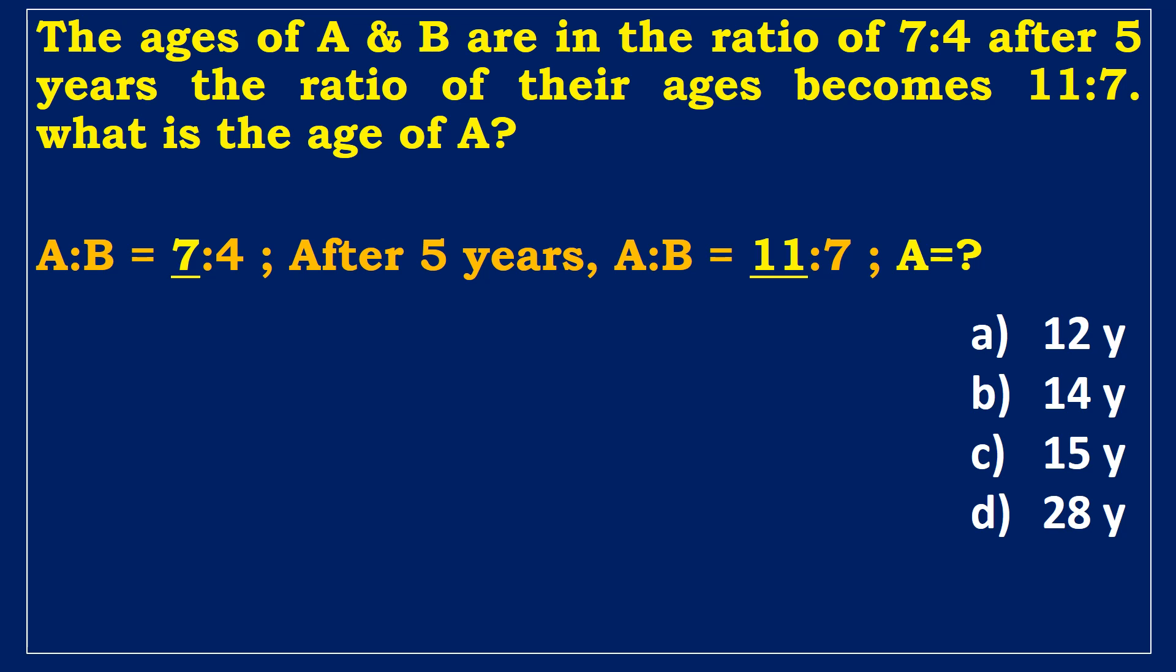Option A, which is 12, is not a multiple of 7. So option 1 is ruled out. Option B, which is 14, is a multiple of 7. Although it satisfies the first condition, after 5 years, the age becomes 19 years which is not a multiple of 11. So option 2 is also ruled out.